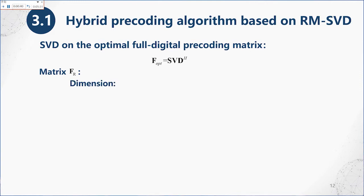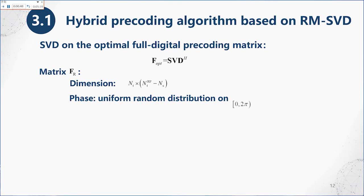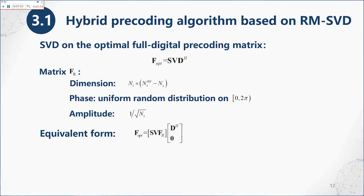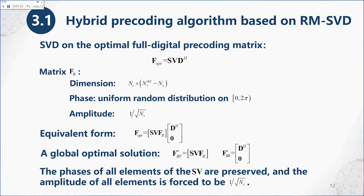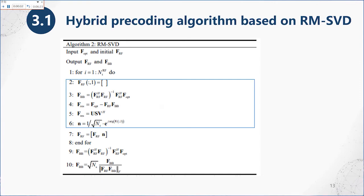We construct a matrix R whose dimension and element phases obey a uniform random distribution, and its amplitude is forced to a constant value. Under unrestricted conditions, according to the SVD of the optimal full digital precoding matrix, a global optimal solution can be obtained. The phase of all elements of the SVD are preserved and the amplitude of all elements is forced to the required value. These are the main steps of the RMSVD algorithm.